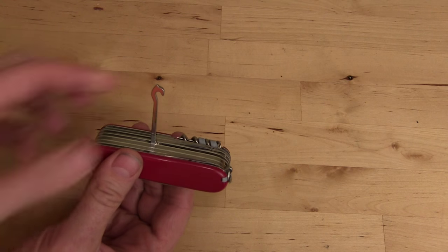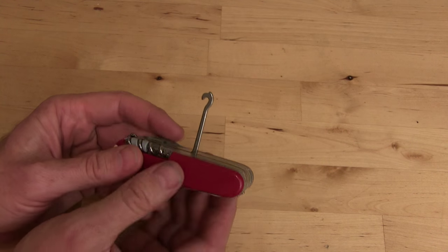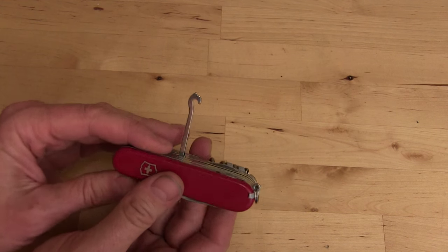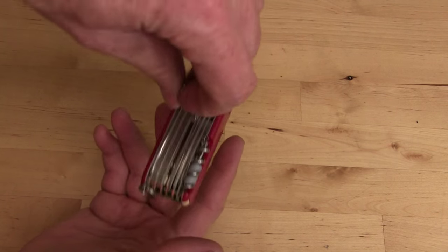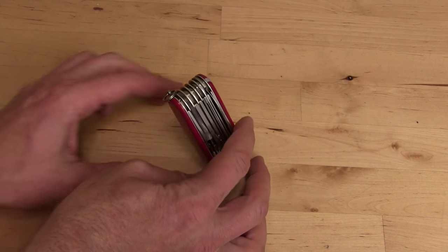And then the multipurpose hook. The ancient Egyptians used something like this to remove the brains from people when they were mummifying them, but I don't think this is long enough to go up somebody's nose and remove their brain. So you could use it to hang your knife or use it as a stand when showing off your knife.